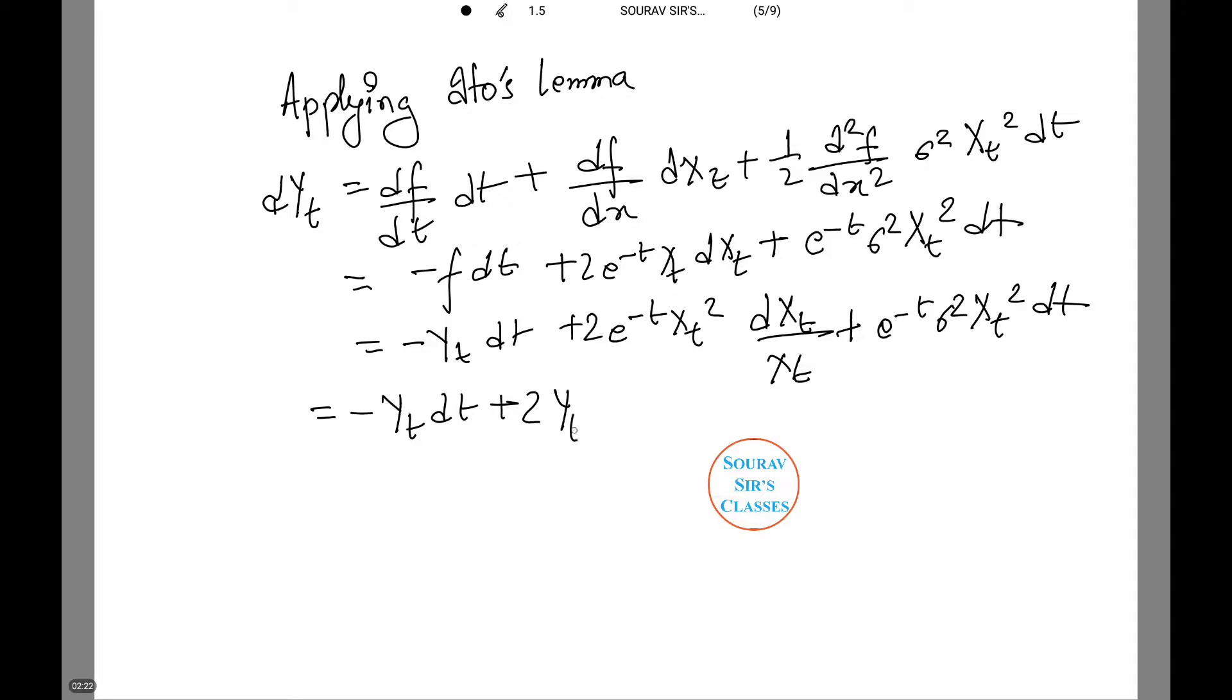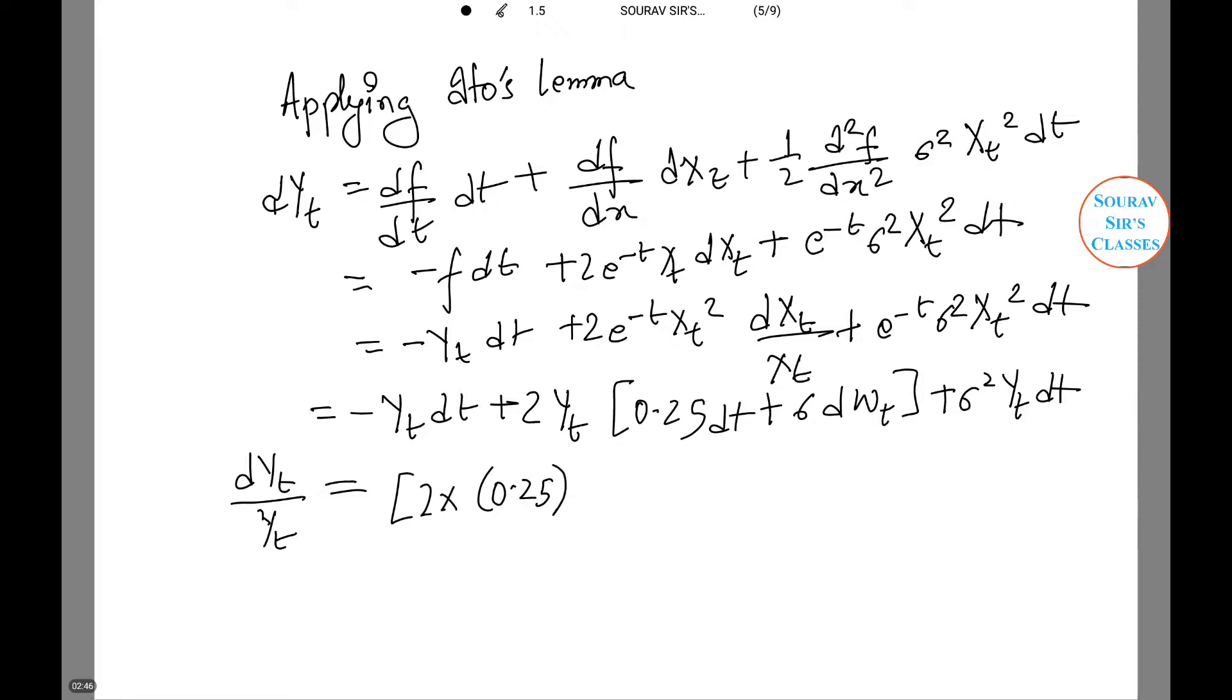Which is equal to minus Yt dt plus 2 Yt into (0.25 dt plus sigma dWt) plus sigma squared Yt dt. Therefore dYt/Yt is equal to (sigma squared plus 0.5 minus 1) dt plus 2 sigma dWt.